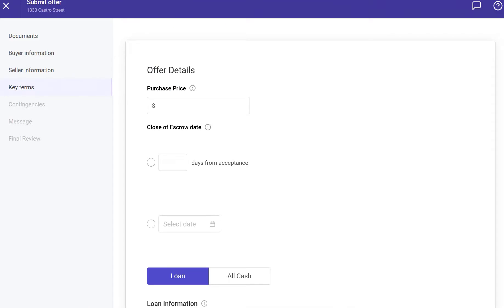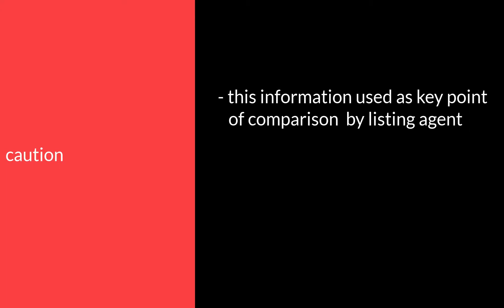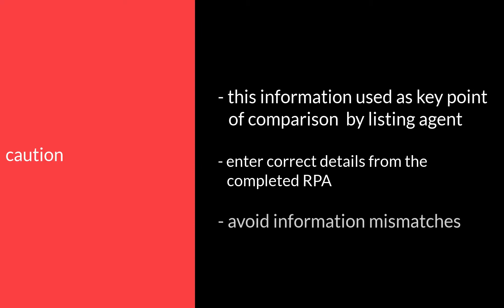On the Key Terms page, add the critical details about the offer. Remember, this information will be displayed as a key point of comparison when the listing agent reviews the submitted offers. For that reason, it's very important to correctly enter the details from the completed RPA into this offer details section on Glide so that there is no mismatch of information.